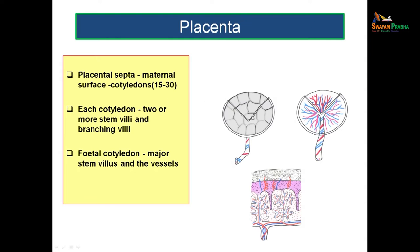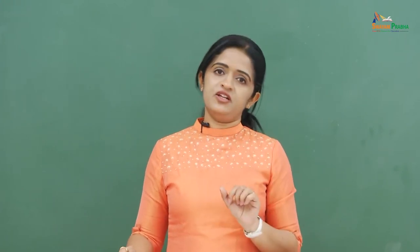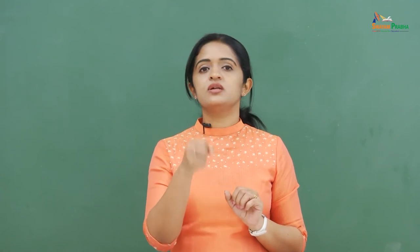When you look from the mother's surface, it does not appear as a smooth flat surface — it shows different polygons due to the presence of placental septa. There are roughly 15 to 30 cotyledons, and each cotyledon has two or more stem villi with branching villi. The fetal cotyledon, seen from the fetal surface, is a major stem villus with the fetal capillaries running through it.